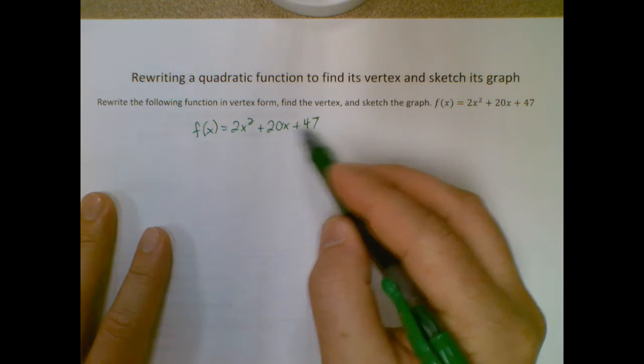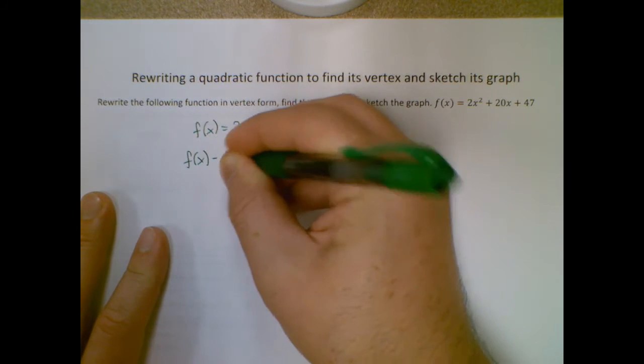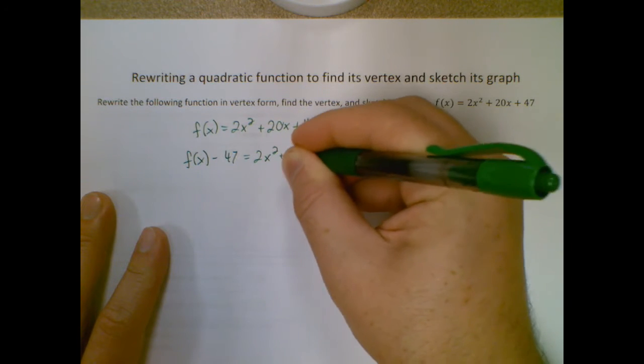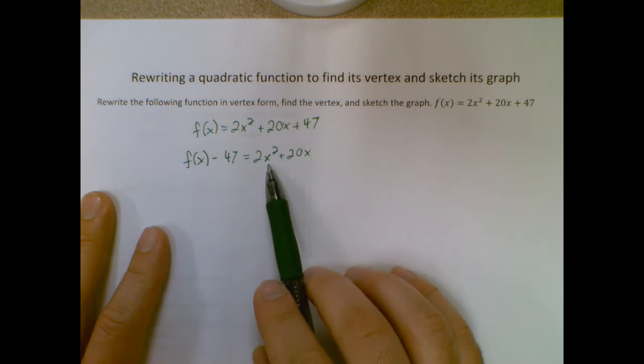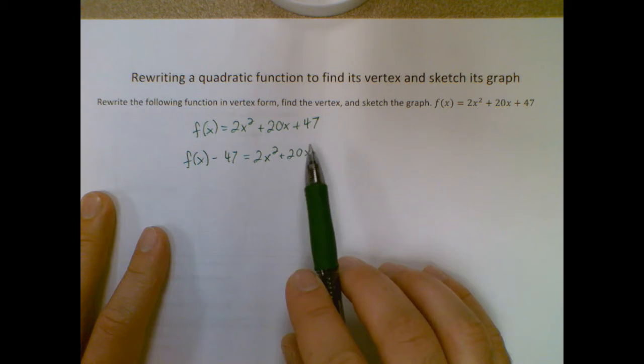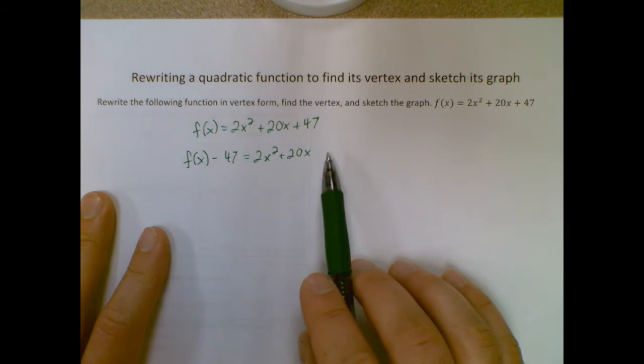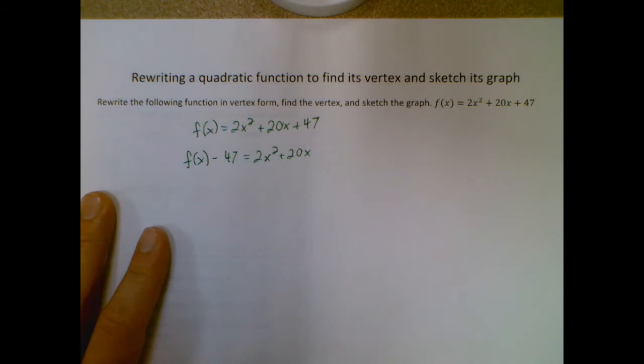First thing is I want to move this constant to the other side. I'm going to subtract the 47 over, and that leaves me with 2x squared plus 20x. The reason for that is to get it to vertex form, I'm going to try to turn this side into a perfect square trinomial, and I need to add in a number here so that it's a perfect square trinomial, and 47 is not going to work. So I just shove it to the other side for the time being.